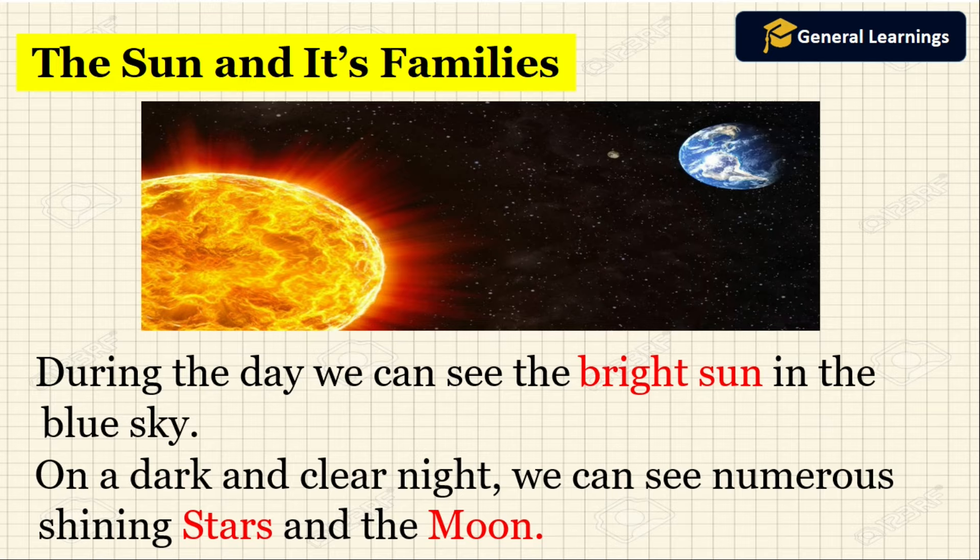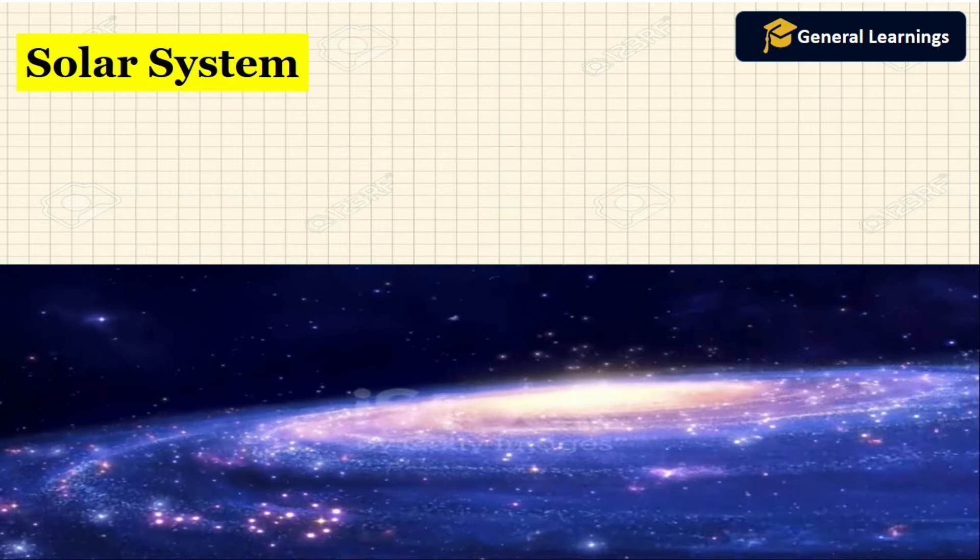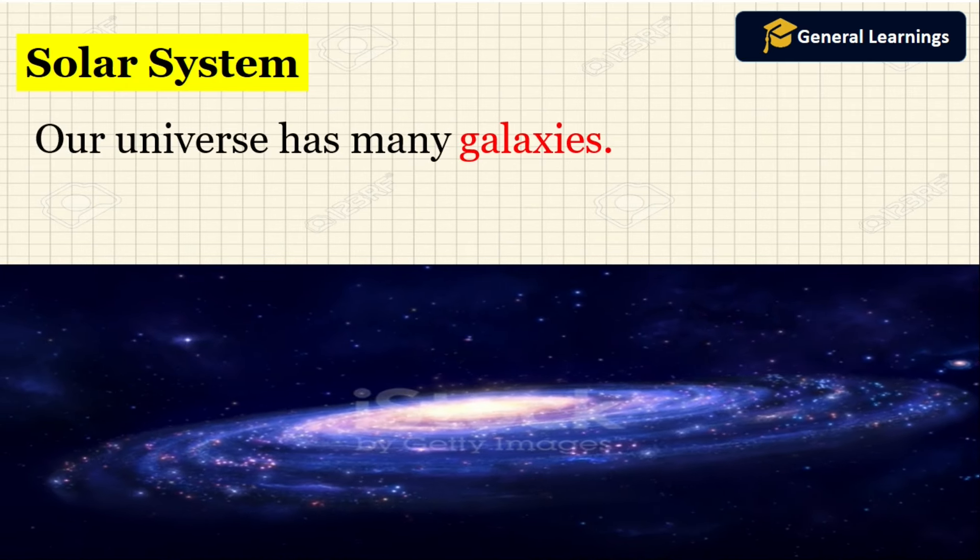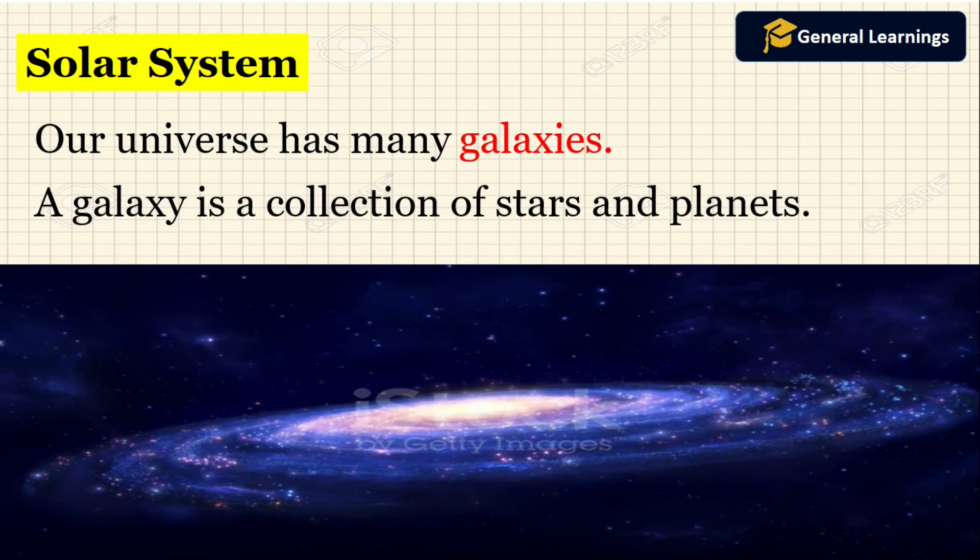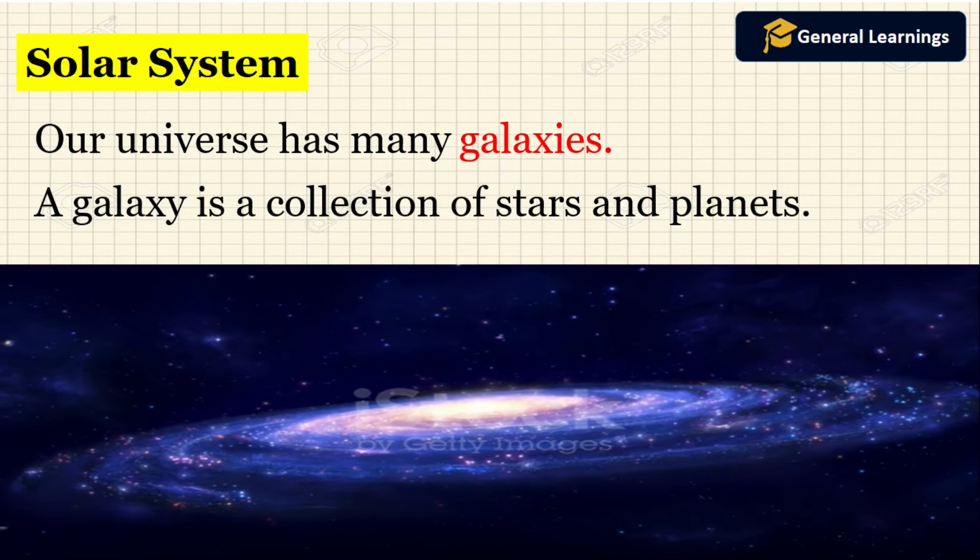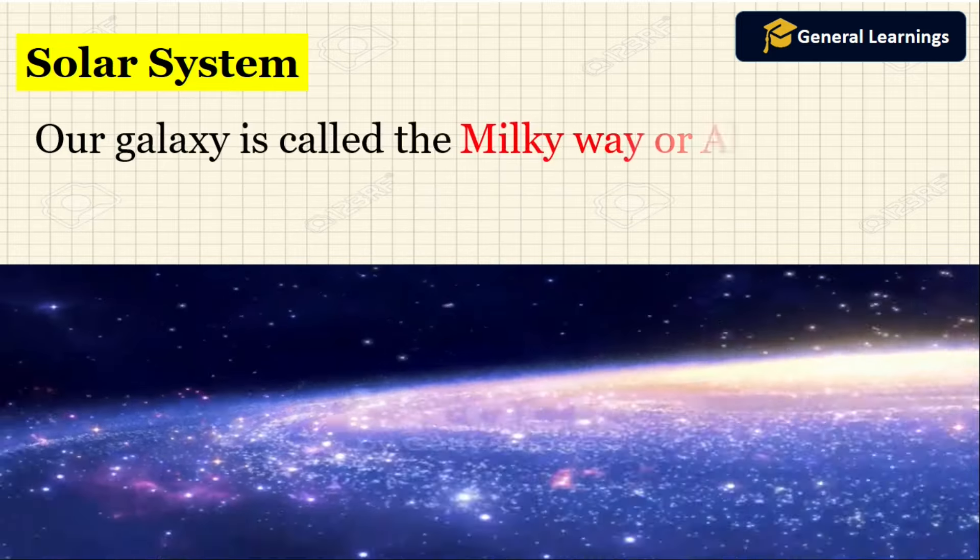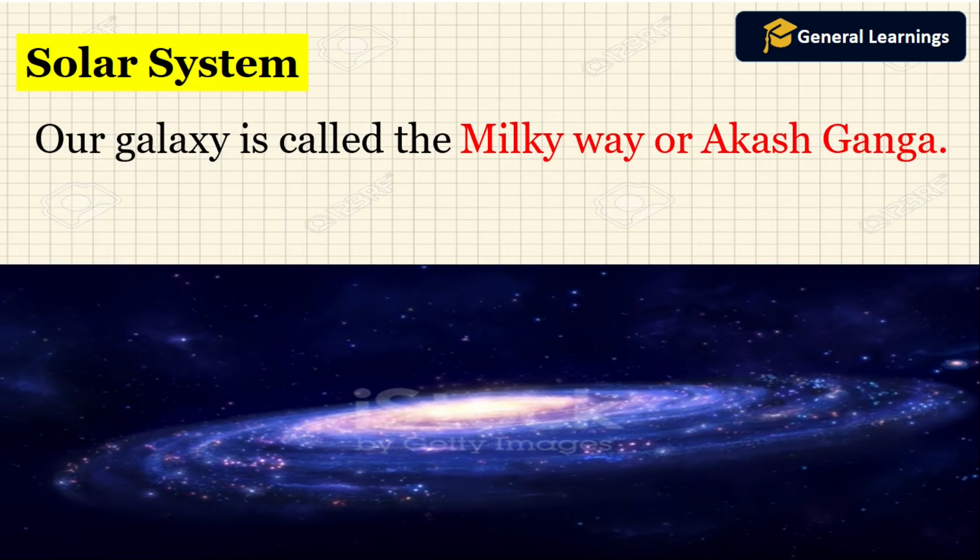Next we are going to see about solar system. Our universe has many galaxies. A galaxy is a collection of stars and planets. Our galaxy is called the Milky Way or Akash Ganga.